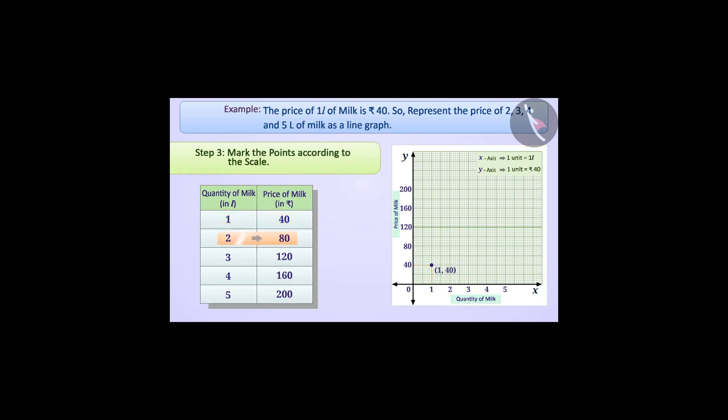The price of 2 liters of milk is Rs. 80, so we move 2 units to the right on the x-axis and then 2 units upwards. At this place, we mark a point with coordinates (2, 80).